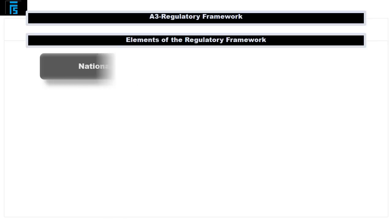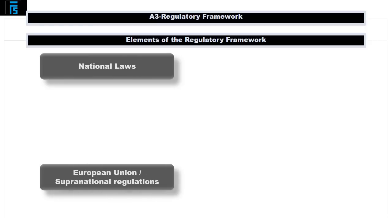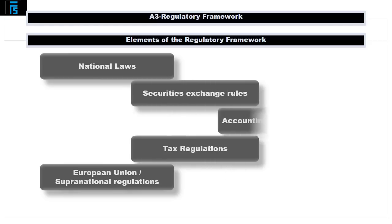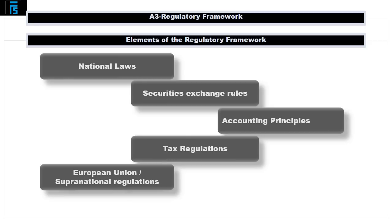These are: national laws, including general regulations such as the civil code; European Union or other supranational regulations, for example in the form of published directives; securities exchange rules; tax regulations; and finally, accounting principles including local accounting standards. All of these regulations make up the regulatory framework in which companies operate, and accounting standards are just one element of that framework.